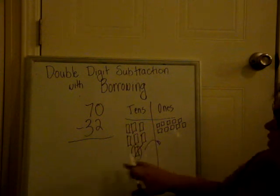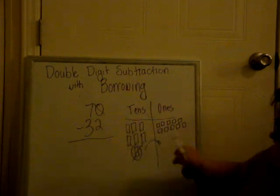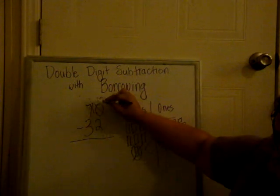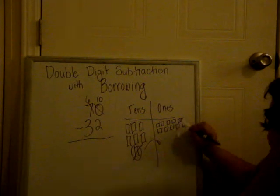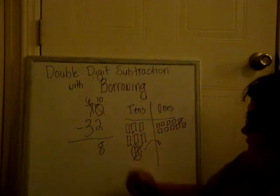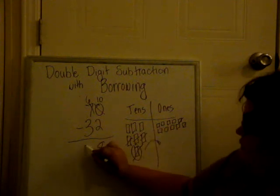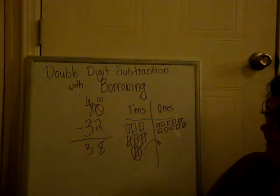Again, our numbers have changed, so we have to change the number here. So our 0 is now a 10. And our 7 is now a 6. So now we can do 10 minus 2, which leaves us with 8. And 6 minus 3 leaves us with 3. So 70 minus 32 is 38.